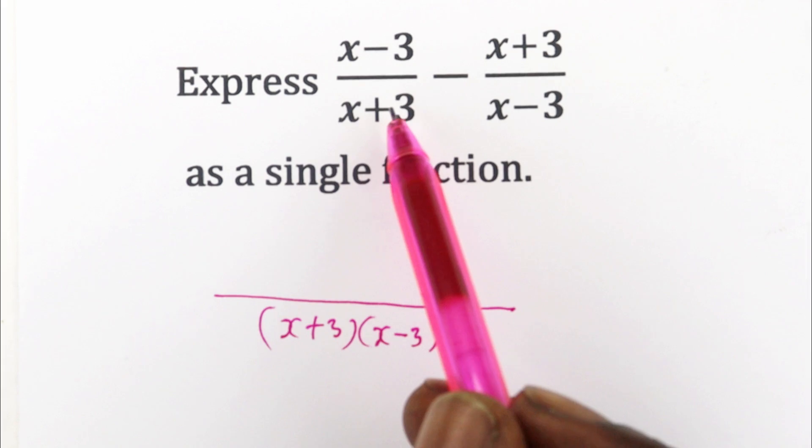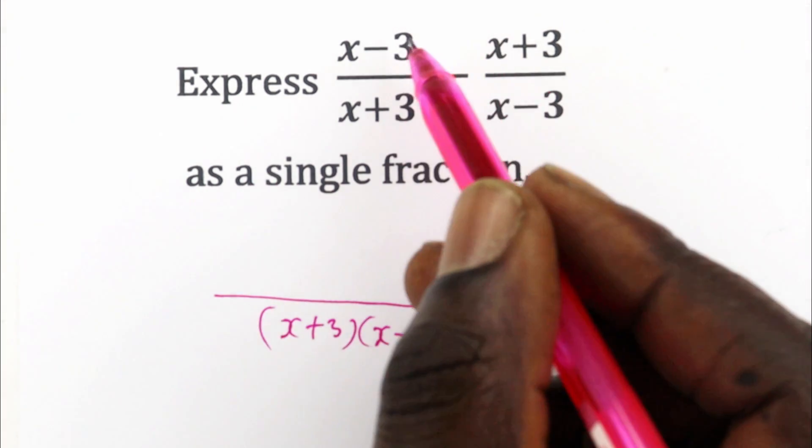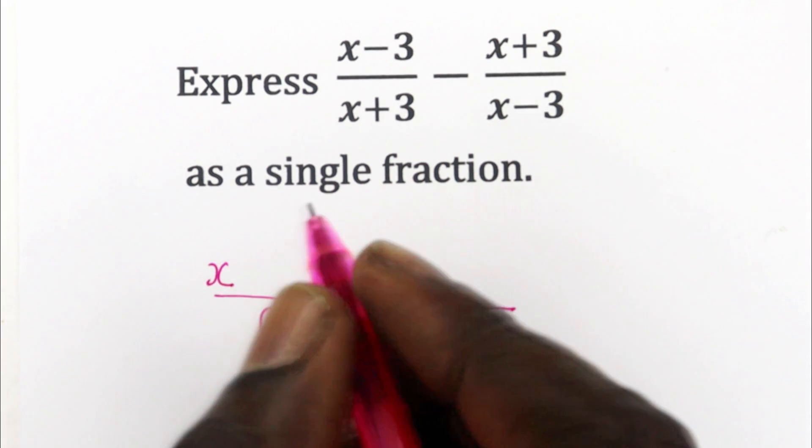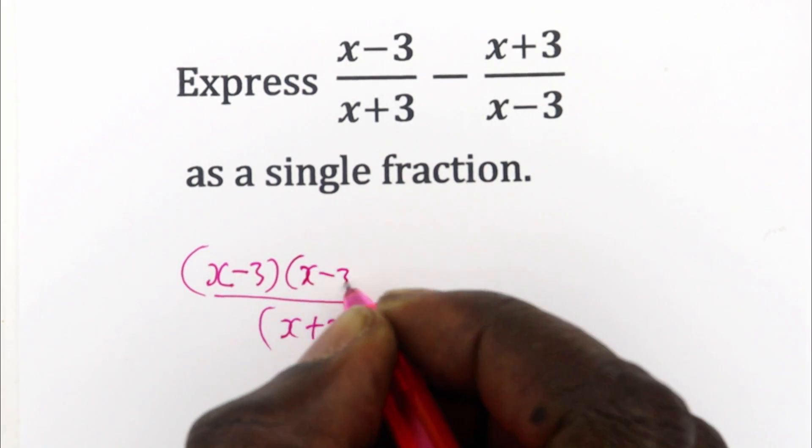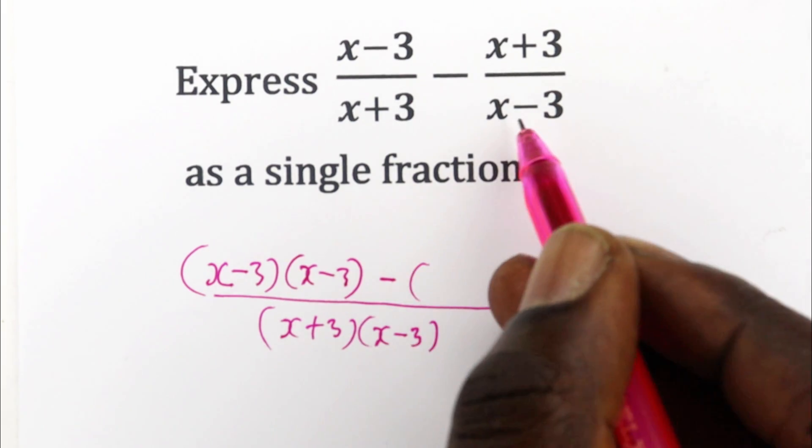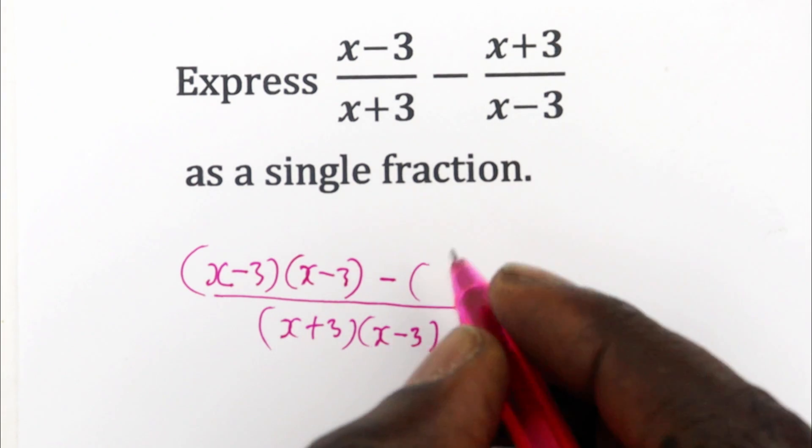So x + 3 goes here x - 3 times. So (x - 3) times (x - 3), that is (x - 3)², minus what we have on this side is x - 3 goes here x + 3 times, so (x + 3) times (x + 3), that is (x + 3)².